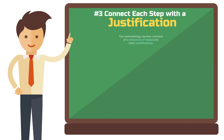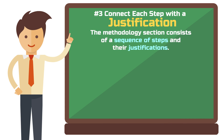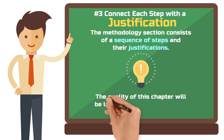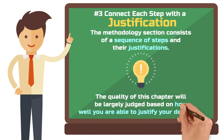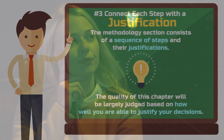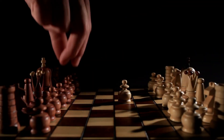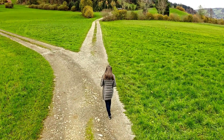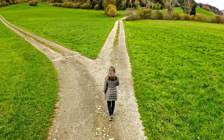As you can see, the methodology section consists of a sequence of steps and their justifications. The quality of this chapter will be largely judged based on how well you are able to justify your decisions. Sometimes you may have to make a decision where you are not sure which direction to go — and that is perfectly fine. Sometimes there is no right or wrong, only well justified and poorly justified. The key is to make a decision and then describe in a comprehensible manner why that decision makes sense both methodologically and conceptually. If you can do that, nothing stands in the way of a high score for this section.